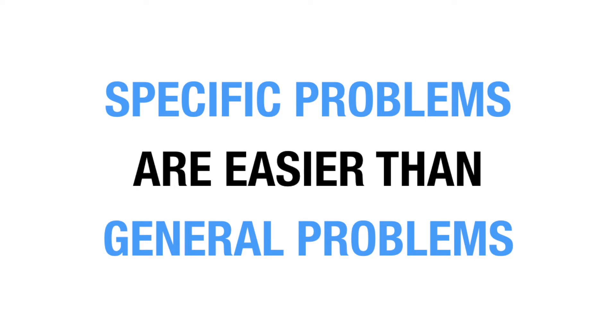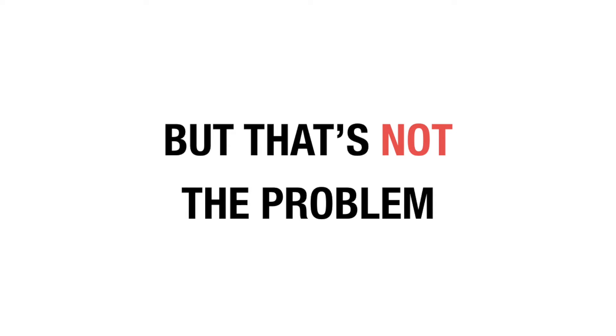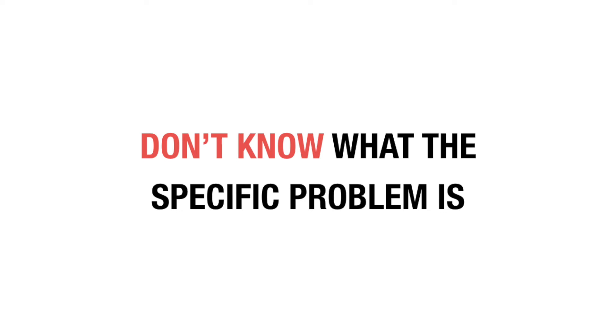Here's the problem. I think it's true that solving the general problem is more difficult than solving the specific problem — I agree with this. But I don't think that's where the problem lies. The problem is this: solving the specific problem is easier if you know what the specific problem is. But in software — and I don't think this is a particularly controversial statement — we more often than not don't actually know what the specific problem we're solving is.